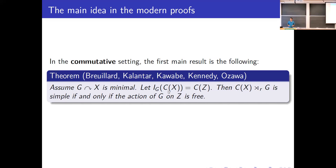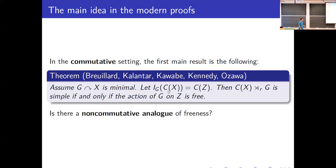Why are these useful? The characterization of simplicity in the commutative setting in terms of the dynamics on X itself is very complicated. But if you pass to the G-injective envelope — which is still a commutative C*-algebra, just some C(Z) — then simplicity of the cross product is equivalent to the action of G on Z being free. It doesn't get any nicer than that.